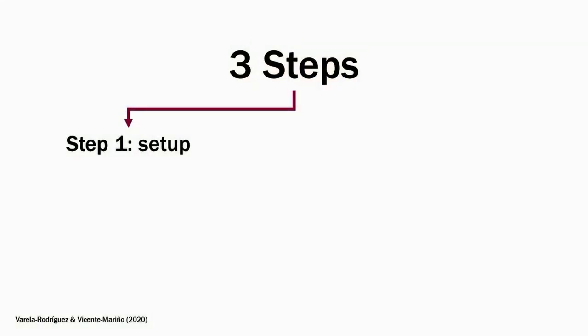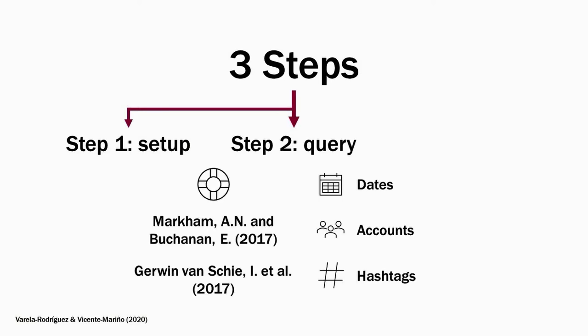To do so, we walk the reader through three simple steps. We begin with the tools that are necessary and how to set them up. We continue by looking at how to define a search query, which is the same as saying how to design our research. This is the part most closely tied to research processes, so we advise readers to follow existing approaches, like the one you see on the screen. This type of tool can generally perform searches for accounts, dates, and hashtags, which are the basic categories we would use.